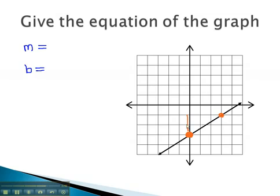Notice this graph has a rise of 2, and a run of 3. This means the slope is rise 2 over 3, or 2 thirds.